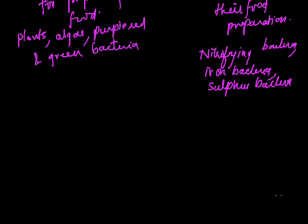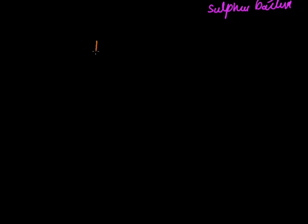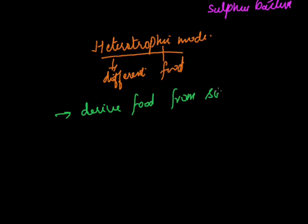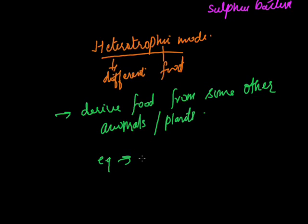Now the second mode of nutrition is heterotrophic mode. Hetero means different and trophic means food. So it is a mode of nutrition in which organisms derive their food from some other animals or plants. A common example for heterotrophic mode is human beings.